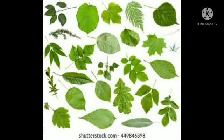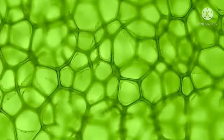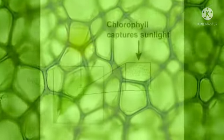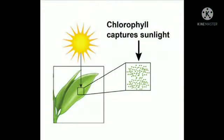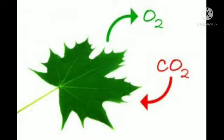Dear children, you may see the leaves of different plants are of different shapes and sizes, and the leaves of most plants are green in color. This green pigment is called chlorophyll, which absorbs the sunlight and makes food for the plant. Leaves are the food factories of plants.